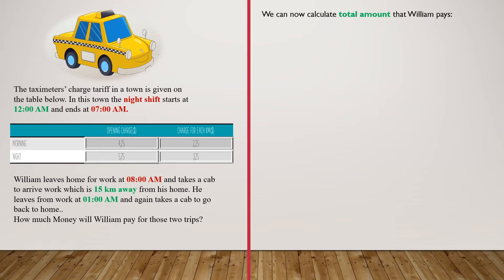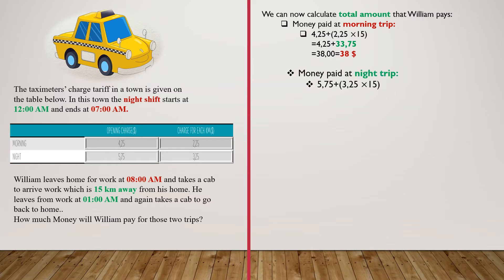Since we calculated the result of the multiplication operations, we can now calculate the total amount that William pays. He will pay 4.25 plus 2.25 multiplied by 15 for the morning trip. We know that 2.25 multiplied by 15 is equal to 33.75, so the result will be 4.25 plus 33.75.